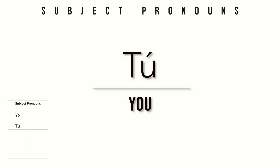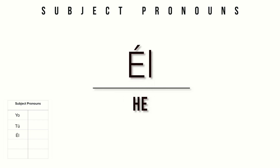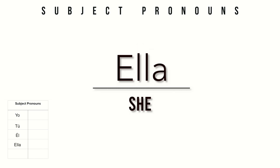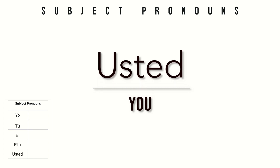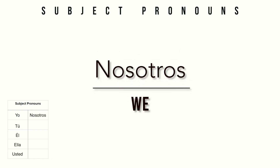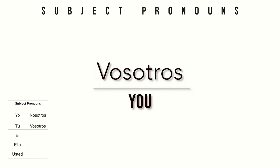Tú is used for informal situations — you're talking to somebody you know really well, there's a mutual respect, and it's not a very formal situation. Then we have él, which means he, and ella, which means she. Usted means you in a formal way — if you're a student showing respect to a teacher or your parents, you'll use usted. Then nosotros means we, and vosotros means you-all — it's a pluralized informal you, but they only use it in Spain.